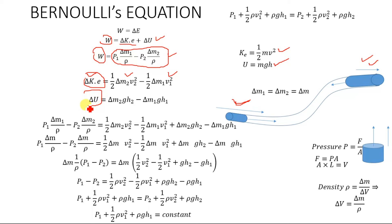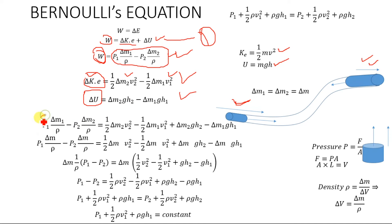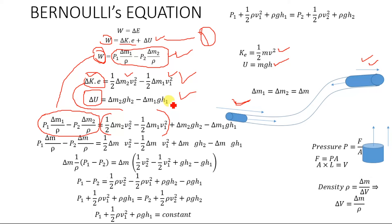We now substitute the values for work done, change in kinetic energy, and change in potential energy into equation number one. This gives P1·Δm1/ρ minus P2·Δm2/ρ equals (one-half·Δm2·v2² minus one-half·Δm1·v1²) plus (Δm2·g·h2 minus Δm1·g·h1). We can now solve this to derive the final form of Bernoulli's equation.